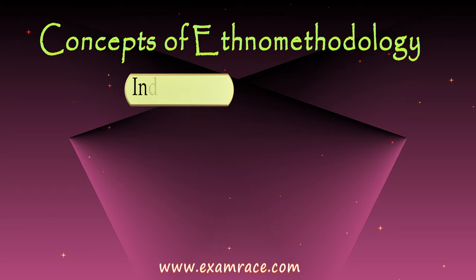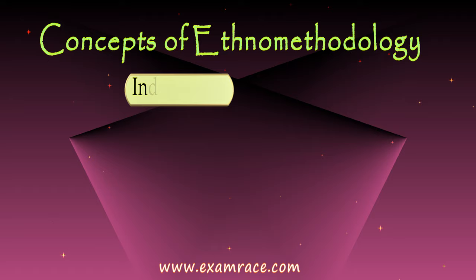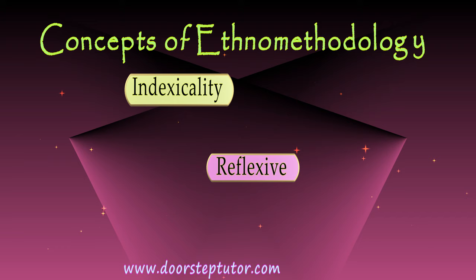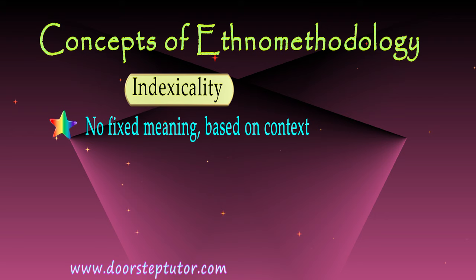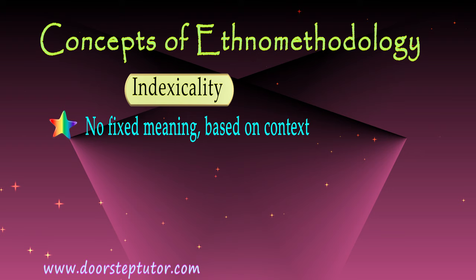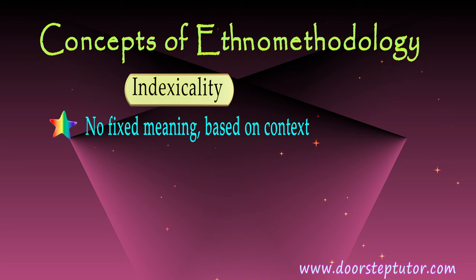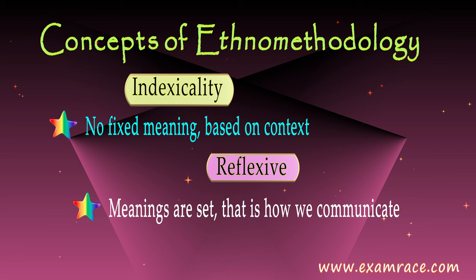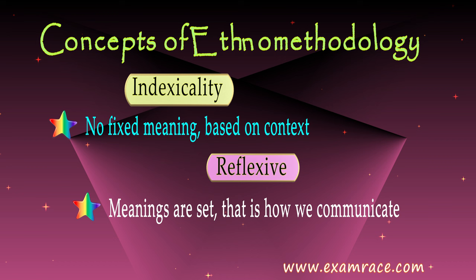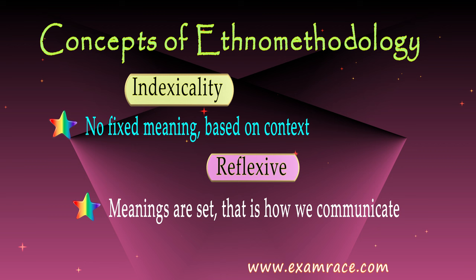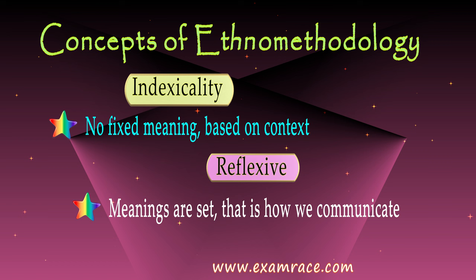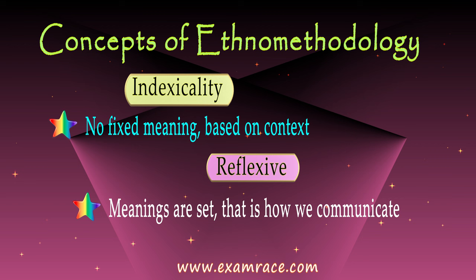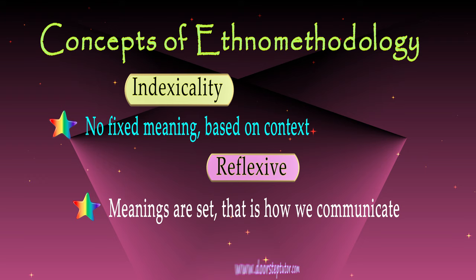Coming to the concepts of ethnomethodology, there are two concepts: indexicality and reflexive accounting. When we talk about indexicality, there is no fixed meaning — meaning can only be derived when it has some context. For example, when there is a suicide, no meaning can be gathered from the pattern alone; only on the basis of some context and evidence can we find out the meaning. On the other hand, reflexivity says that meanings are always set and that is how we communicate. For example, when you go to a mall and browse clothes, and the salesman comes near you, you know he wants you to buy something. You might say you are just looking or simply turn and move ahead. How do you know this? Because these meanings are set, and that is how we react and communicate.